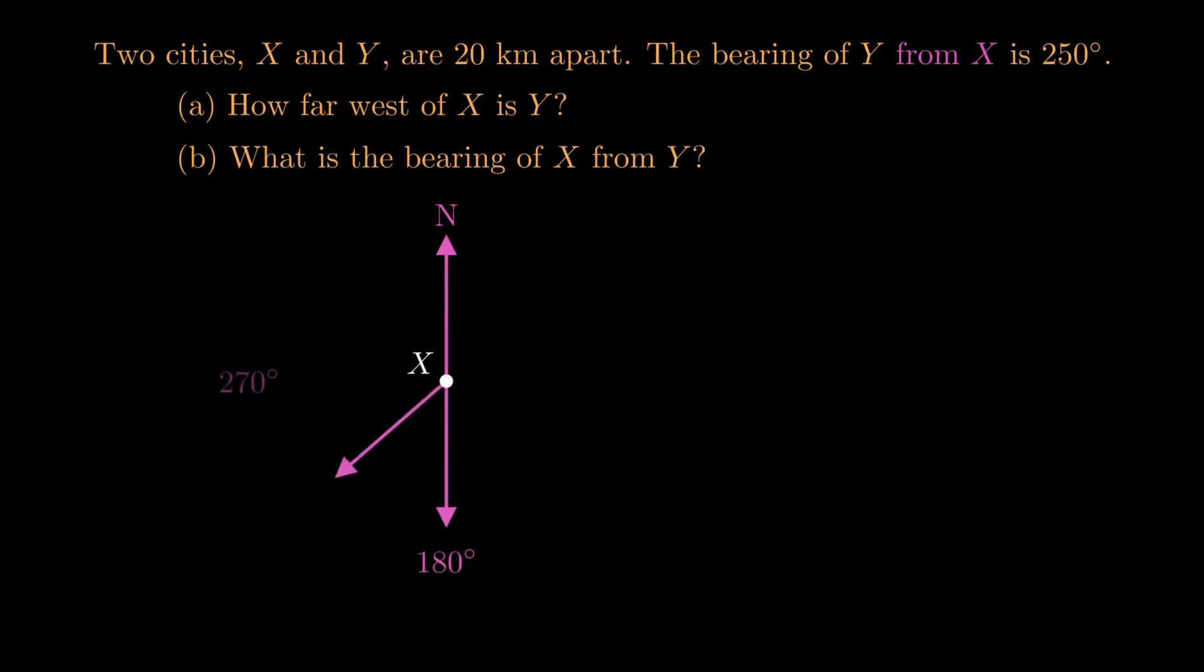Directly west would be 270, and so we're somewhere in between, like so. So we know that our city Y is in this direction at a distance of 20 kilometers, so there's our Y.